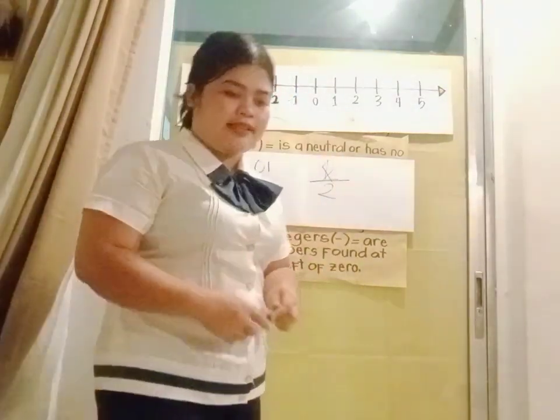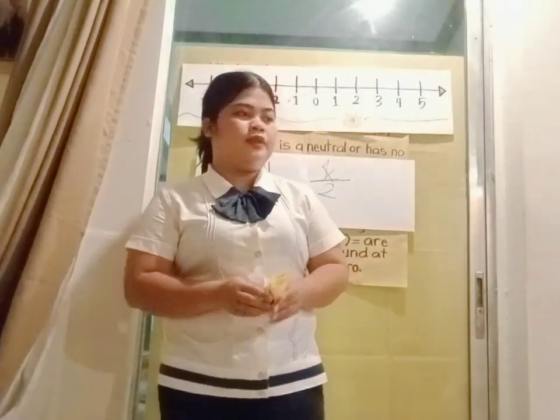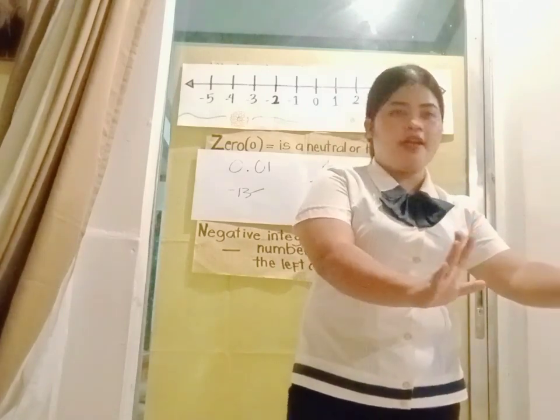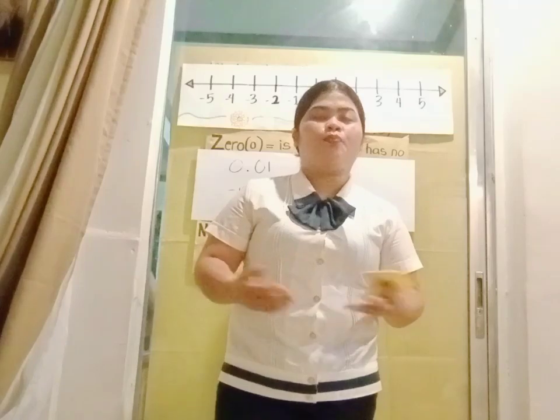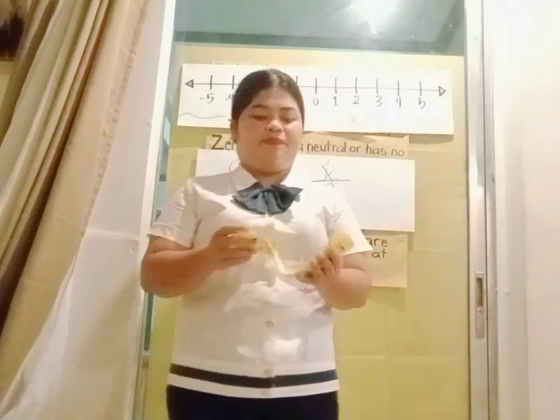Since you now understand, I have here an activity. Group 1 and Group 2 — please get a piece of paper. You will answer in order, and whichever group gets more correct answers will be the winner. Those seated at the back, come to the front so you can help your groupmates. Okay, is everyone ready? Very good.